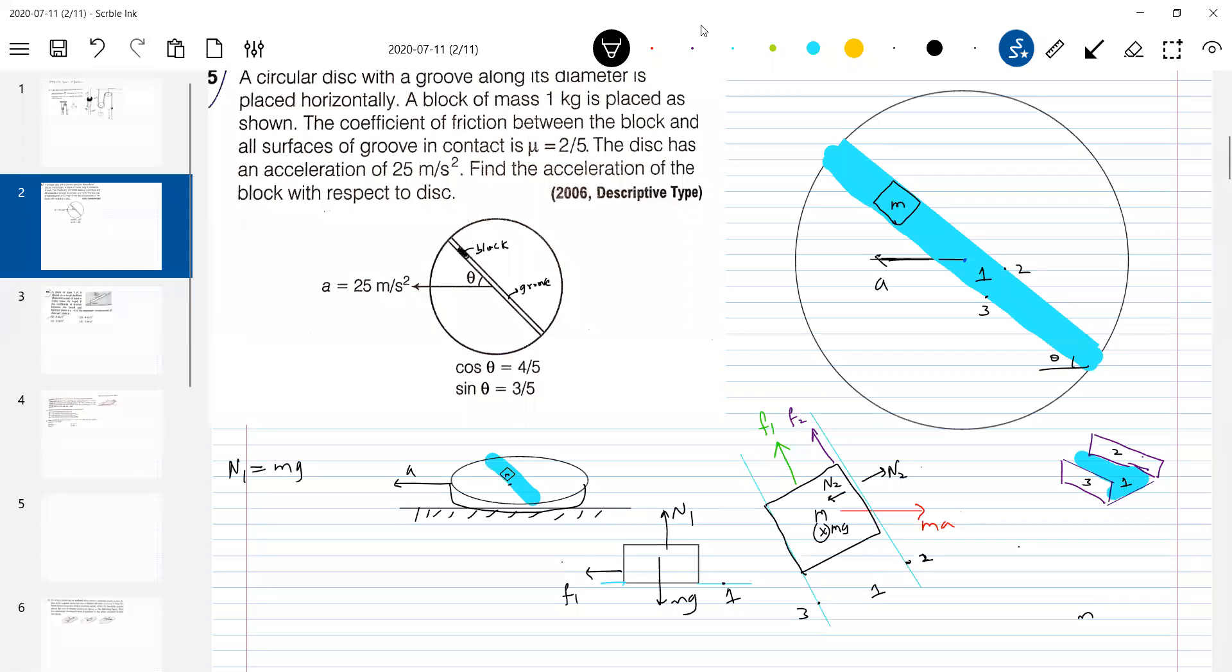Now what about N2? Component of this pseudoforce should balance that. We have this angle theta. This angle will be theta. So what is N2 should be equal to? N2 should be equal to ma sin theta. This is the value. So what is sin theta? 3 by 5. So 3 ma by 5.